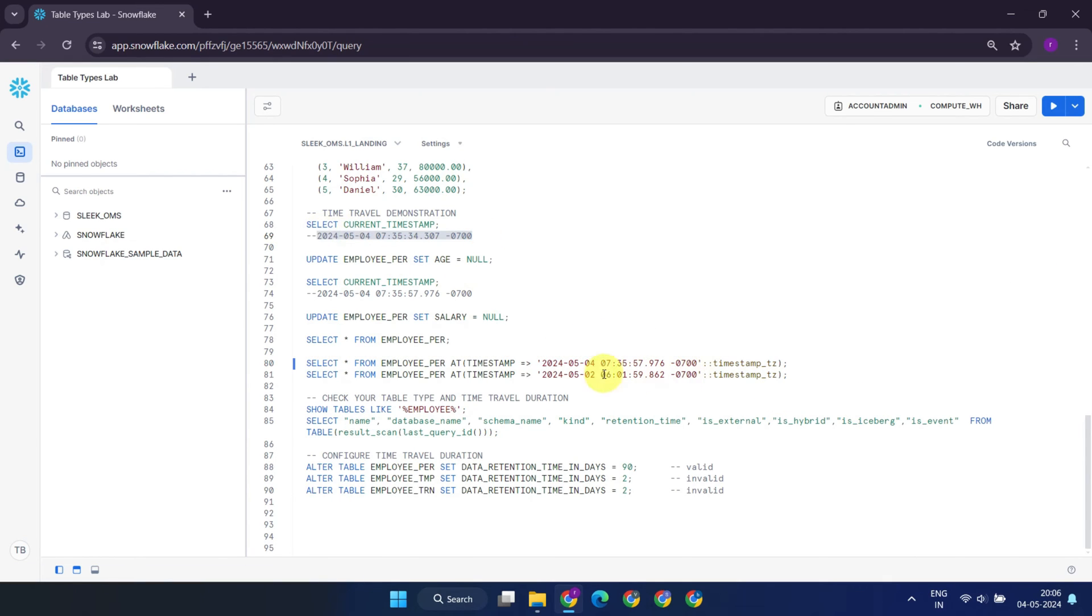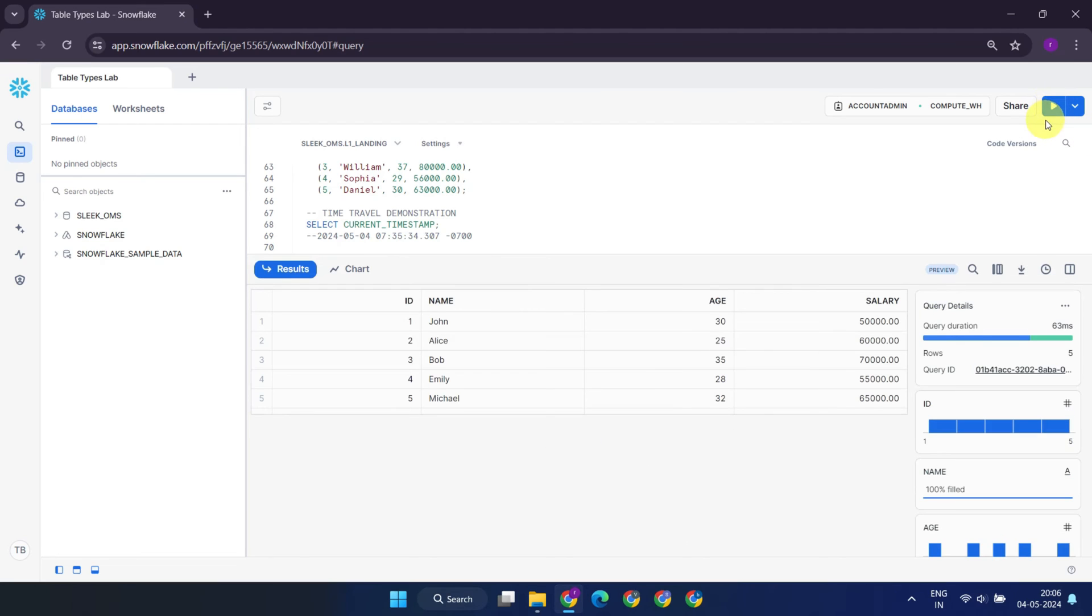With this feature, you can revert back the data to any point within the time travel window of the underlying table. As evident, I've also retrieved the data that existed before both my first and second updates.